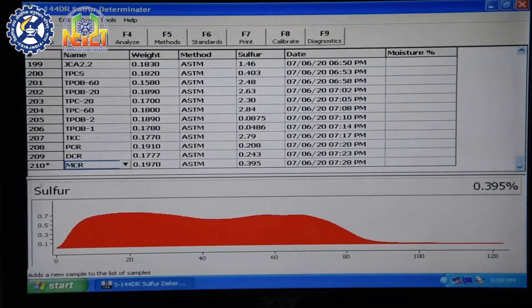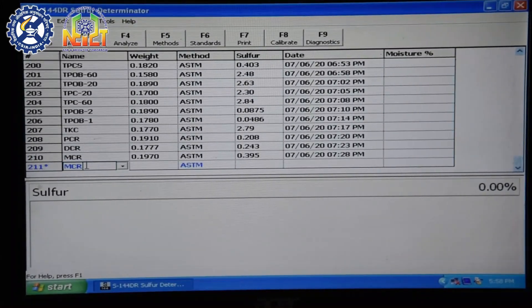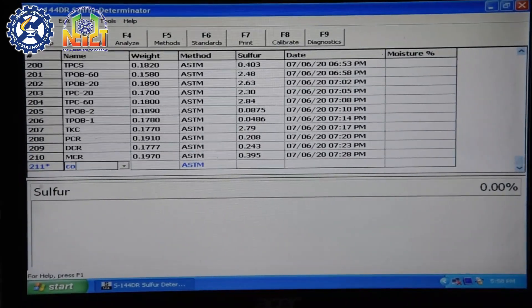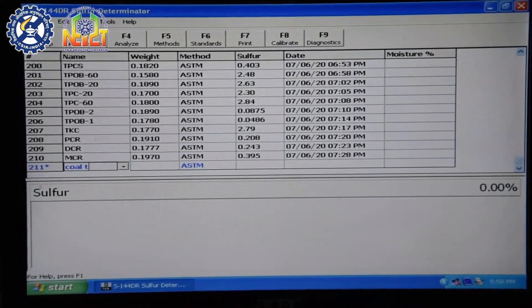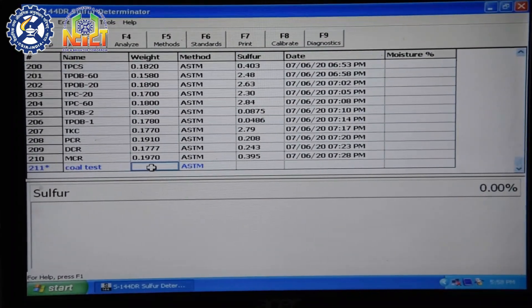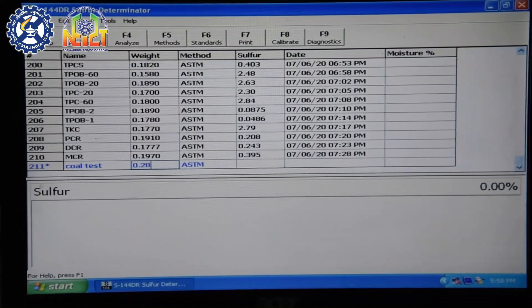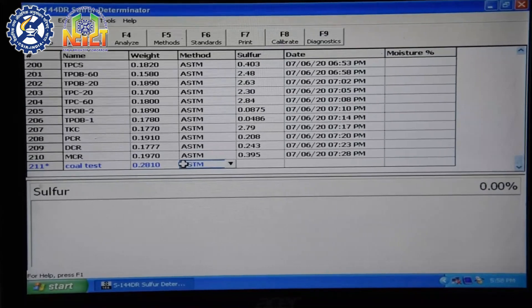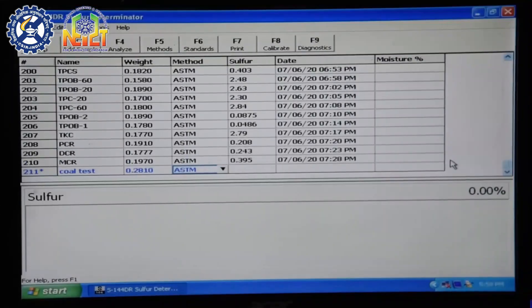Click add sample button and click on the name drop down menu to enter the sample ID. Enter the weight by typing it in the weight column. Click analyze.